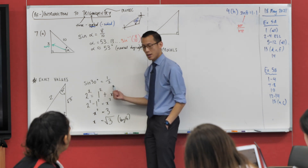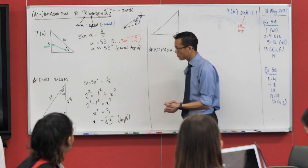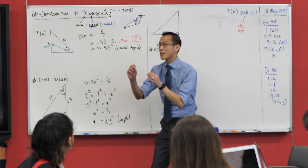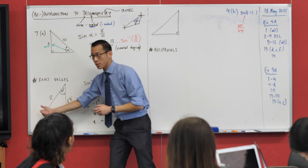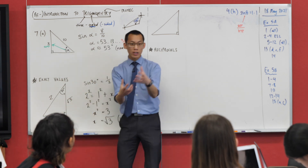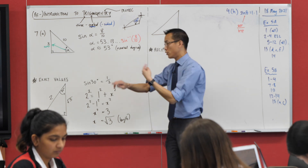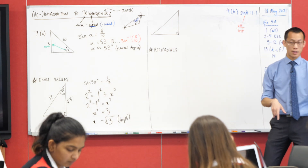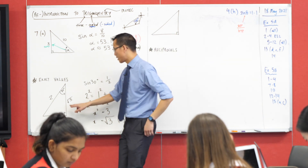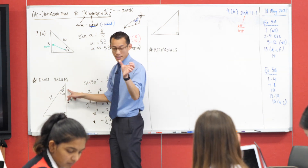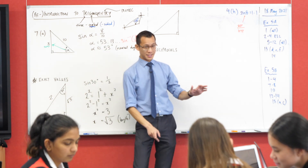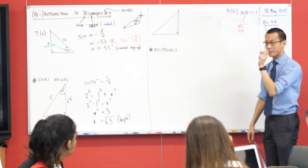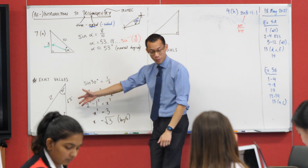Now I know not just sine 30 = 1/2 — I can also say what cos 30 is. Cosine is adjacent over hypotenuse, which is therefore √3 divided by 2. With the person next to you, one of you put in √3 divided by 2 and the other put in cos 30 degrees — do you get the same answer? You get 0.86-something. You'll get very familiar with that number because you'll see it over and over again.